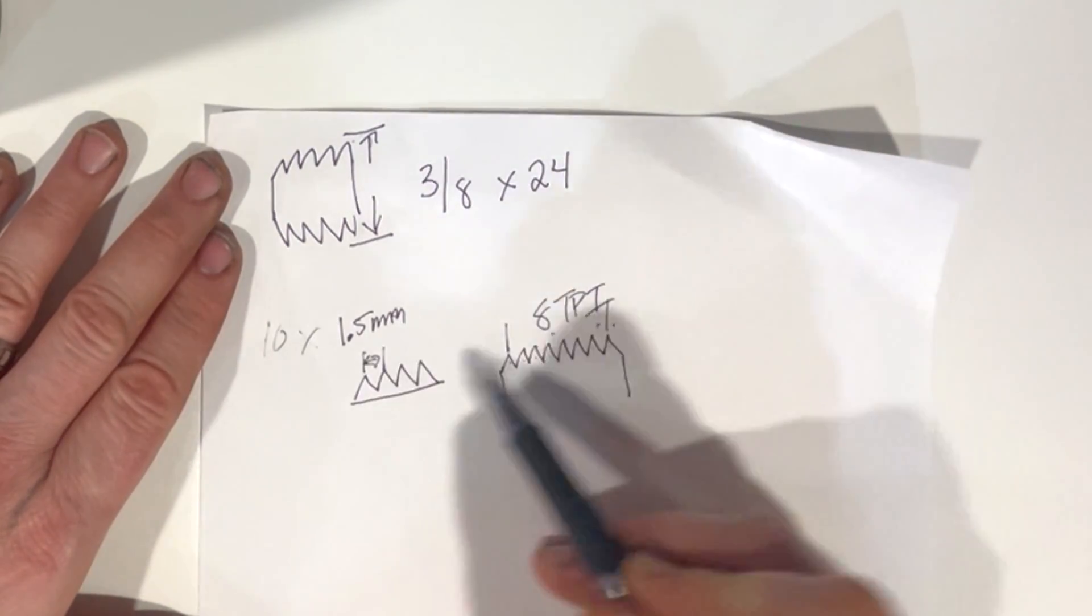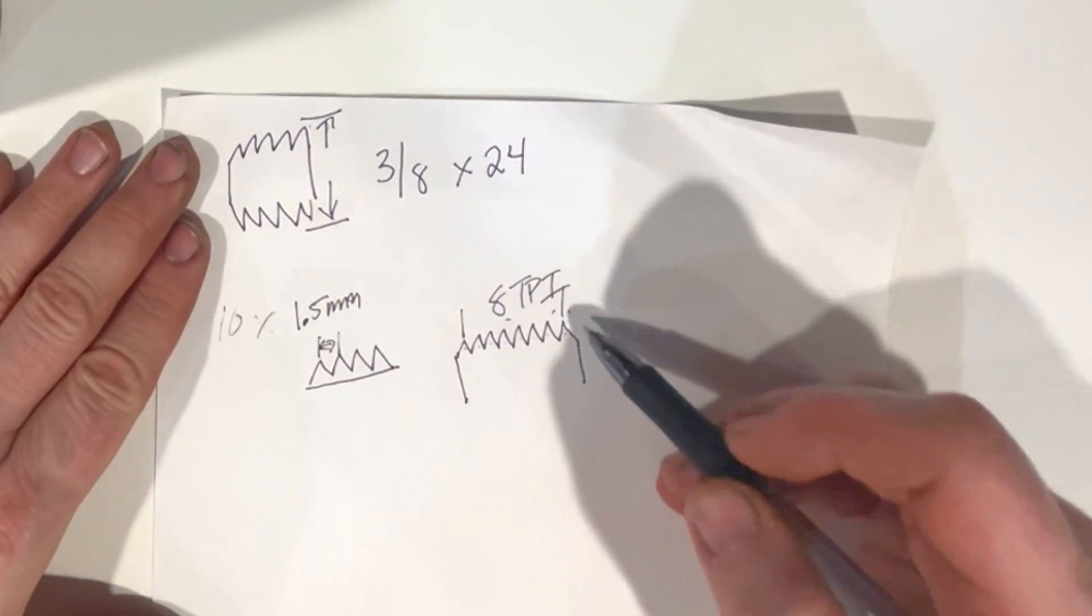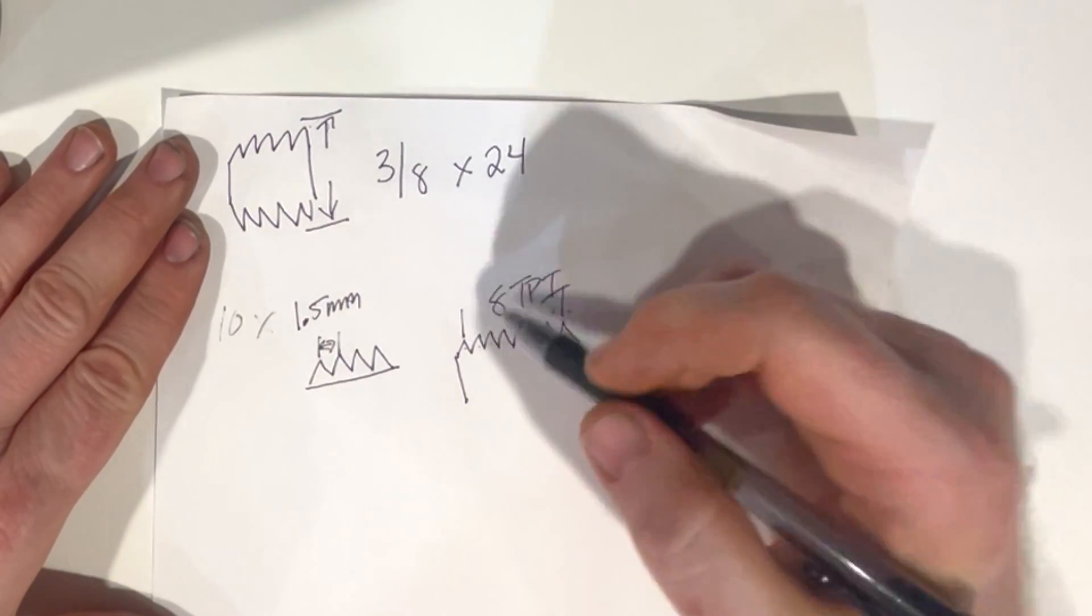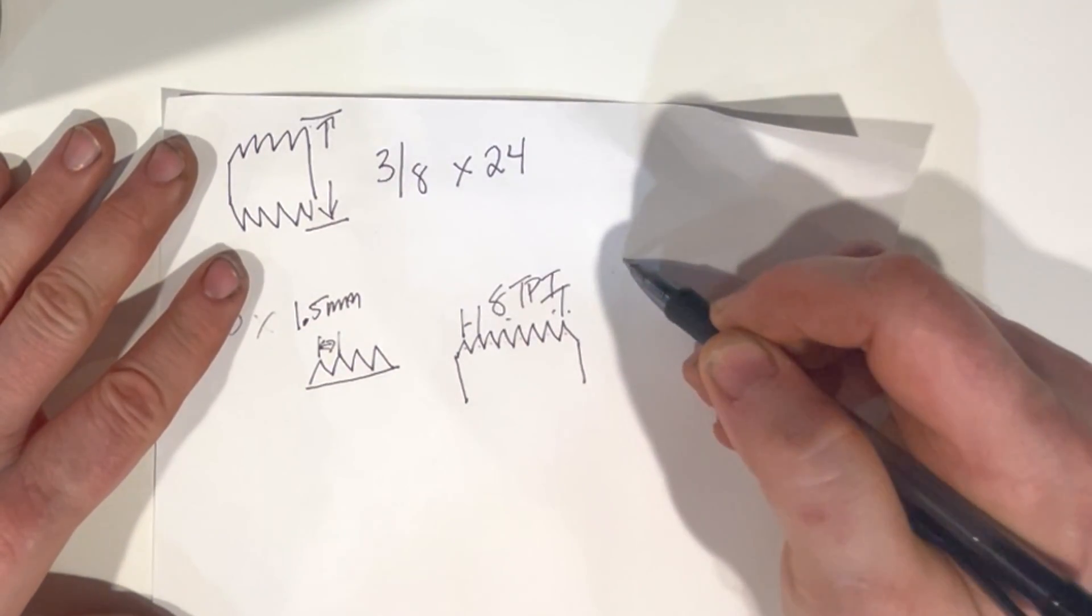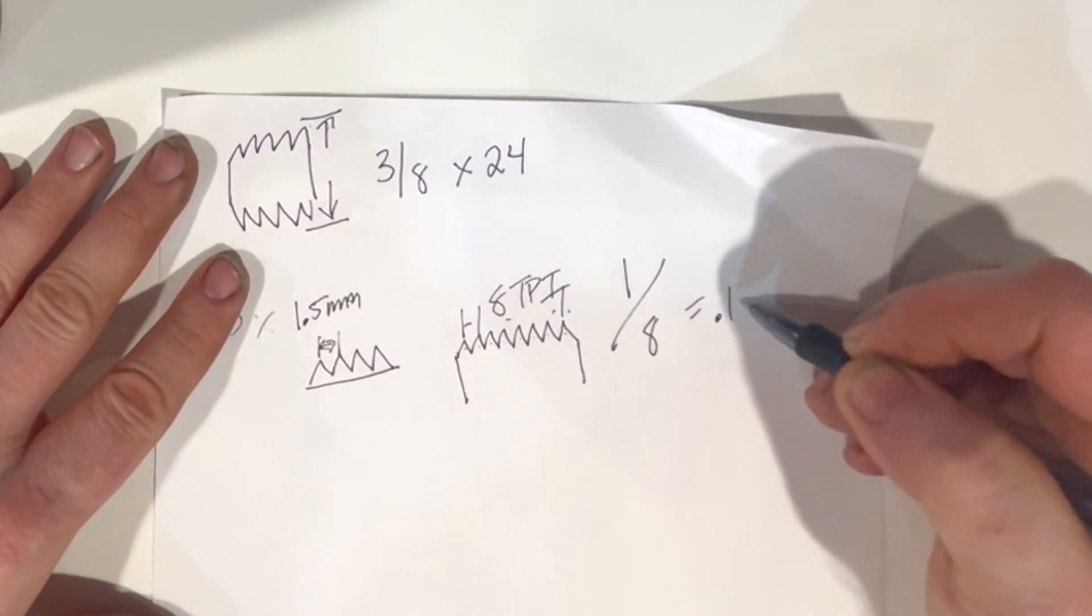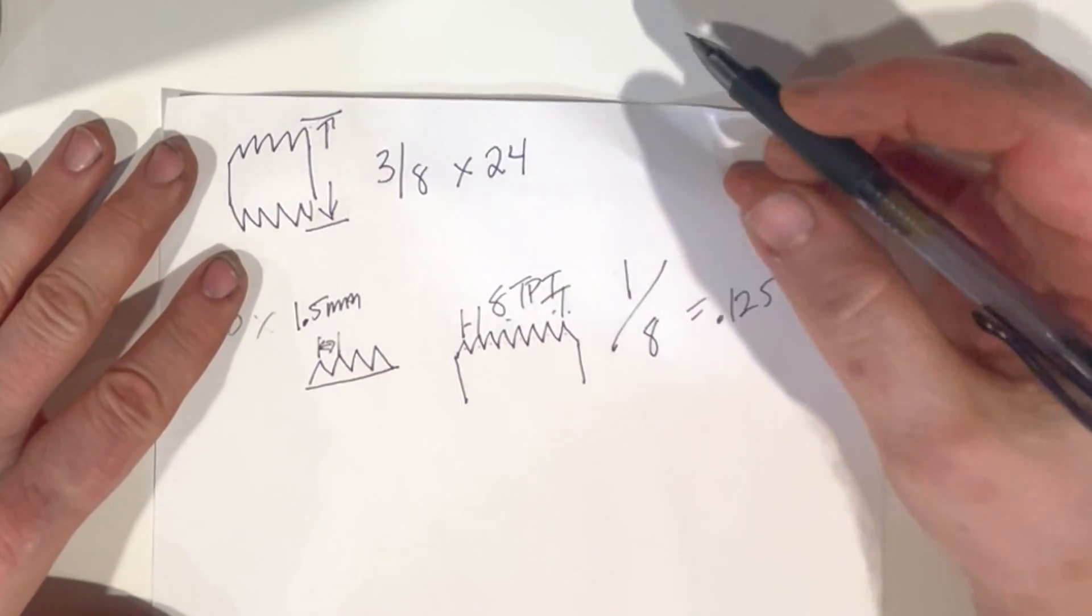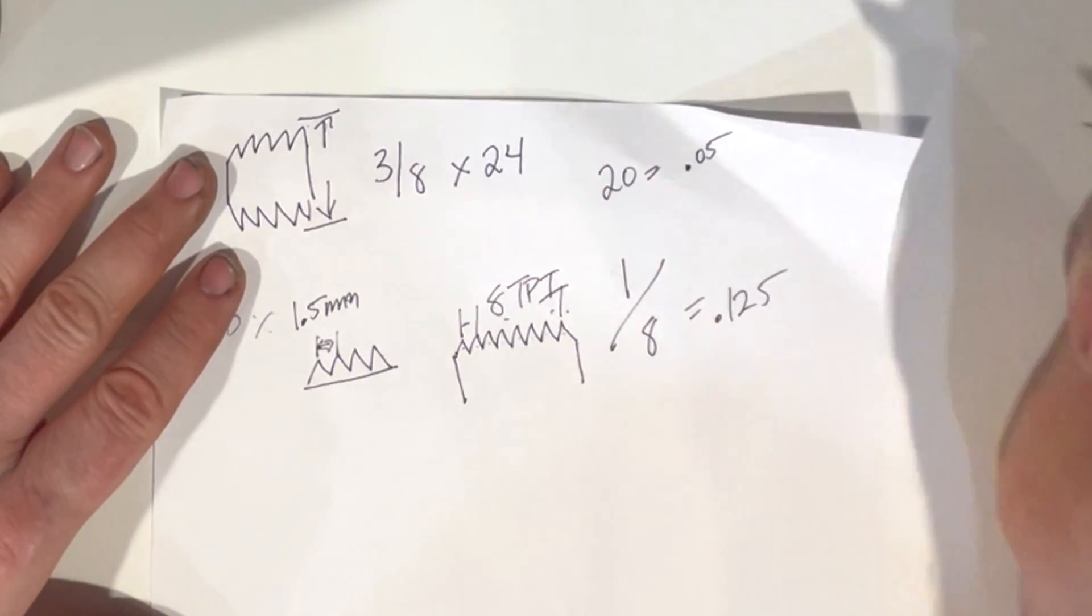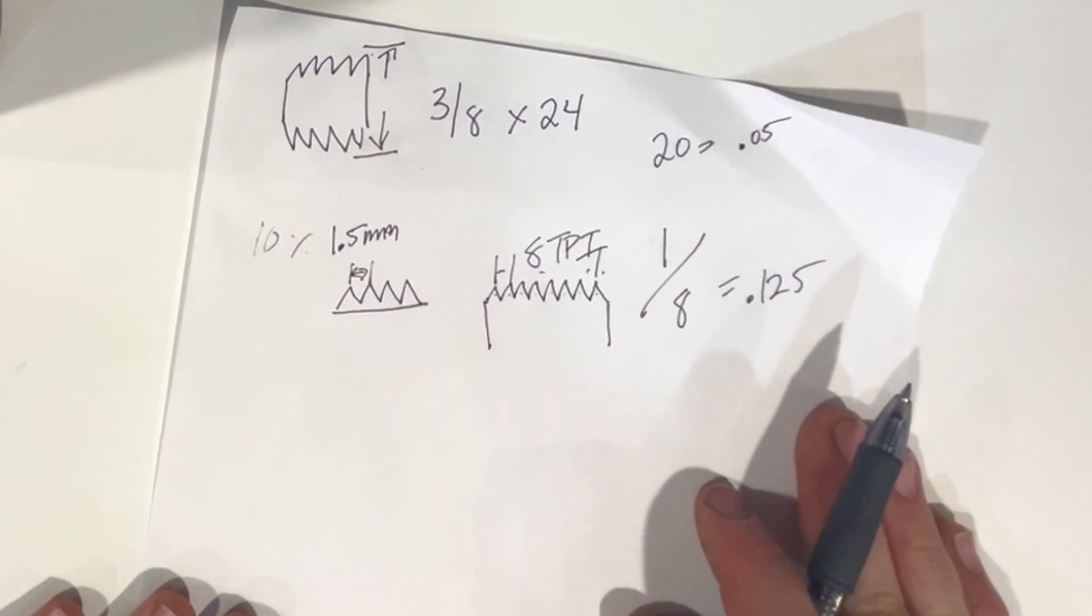Both are called pitches, they're just expressed differently. That's the only thing. In inches, we can also, if let's say we wanted to find the actual number of how far two are apart, it's really simple. Just type in a calculator one over eight in this example, which would equal 0.125. 24, I don't know what that is off the top of my head, but let's say 20 equals 0.05. Pretty simple, and that is how threads are expressed.